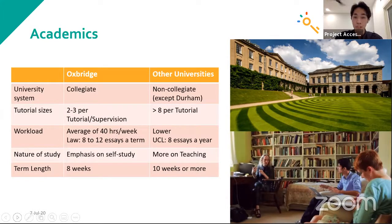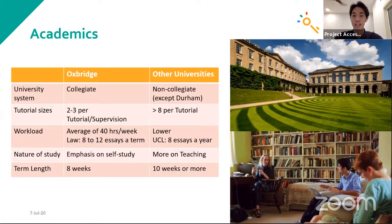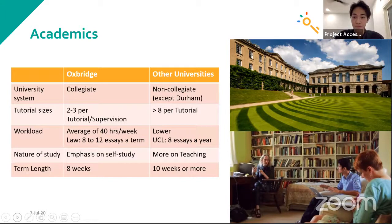To make matters worse, our term lengths at Oxbridge are less than other universities. We have eight-week terms, whereas other universities usually have about 10 weeks or more. So on top of the workload, you're going to have less time to complete the work. This is not meant to scare you, but just to give you a realistic picture of what to expect. I definitely wish I had known this before applying, just so I could have been more prepared when I arrived.